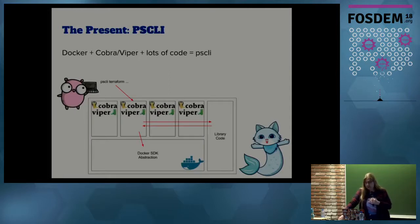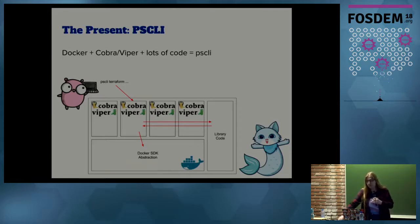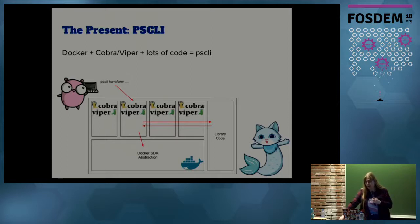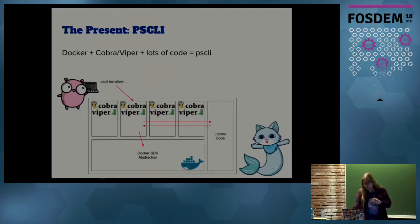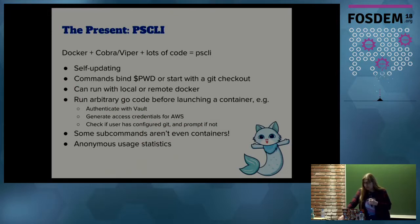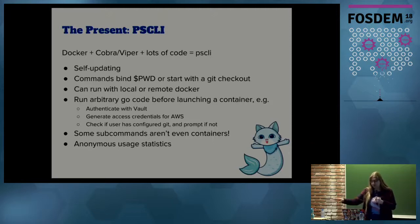So we created a tool called PSCLI, which is written in Go. It interacts with the Docker SDK - the same code that the Docker client uses. It uses Cobra and Viper to wrap stuff up into a nice CLI that developers can just run. There's also a lot of nice library code that we can run prior to launching a container. One nice feature is that it's able to update itself. So developers previously updating that VM was a pain - in this case, it's just one command and it updates.